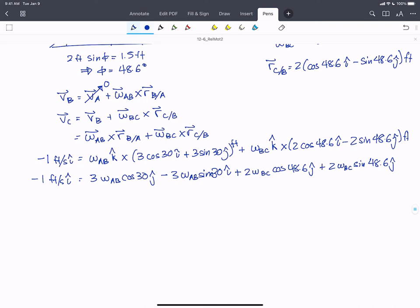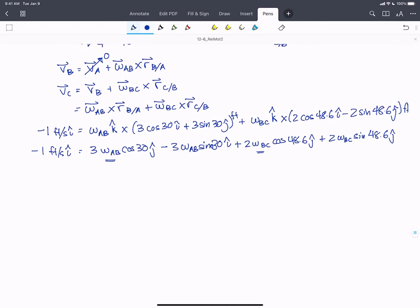Alright, so we have this vector equation. We have components in i and components in j, and we have two unknowns. Omega AB is an unknown, and omega BC is an unknown. Two unknowns, we need two equations. Fortunately, we can always split a vector equation into components. So we'll split this into components. And so our i-hat equation is going to be minus 1 equals minus 3 omega AB sine 30 plus 2 omega BC sine 48.6. And our j-hat equation is 0, so VC doesn't have a j component, equals 3 omega AB cos 30 plus 2 omega BC cos 48.6.